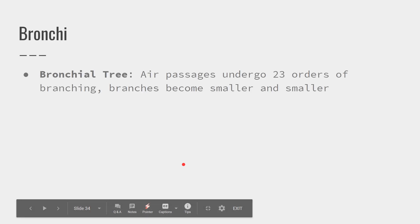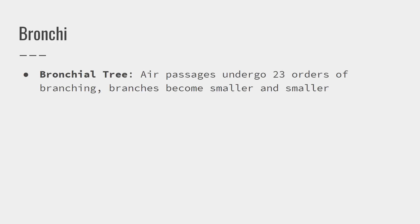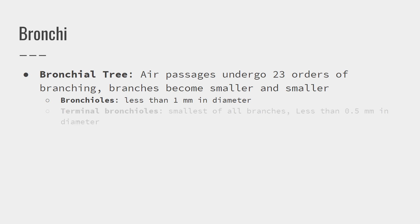Last topic for today: the bronchial tree. The trachea branches into the bronchi and then smaller and smaller. Bronchioles are less than one millimeter in diameter, and then we get even smaller terminal bronchioles — 0.5 millimeters in diameter. Those are the parts that are going to connect to the alveoli.